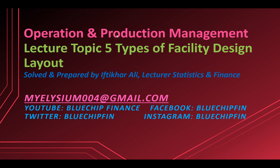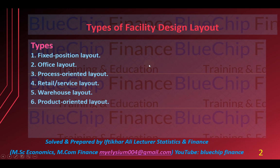Hello and welcome to my channel Bluechip Finance. In today's video we are going to discuss types of facility design layout, which is our topic of operation and production management. There are six most important types: first is fixed position layout, second is office layout, third is process oriented layout, fourth is retail or service layout, fifth is warehouse layout, and sixth is product oriented layout.